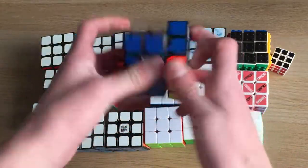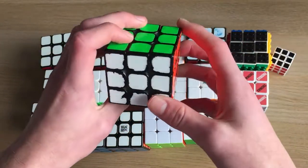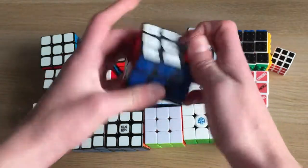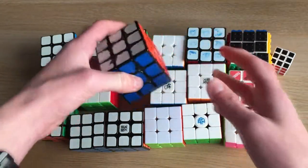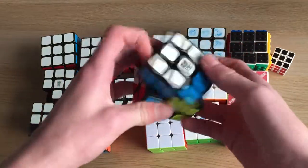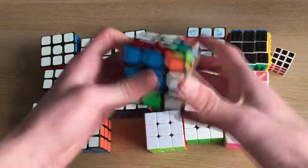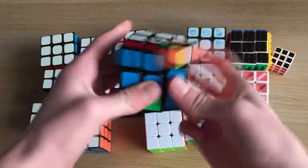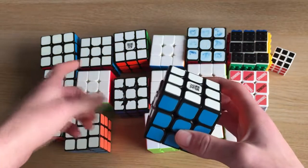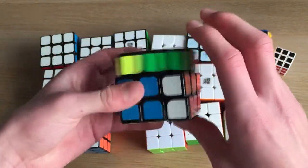The YJ MGC, which was my main for quite a while, as you can see by the state of the stickers. I really like this cube. Then we've got the Valk 2, which is one of my first speed cubes. I used this for a little bit as my main before I got the MF3RS2. It's not bad.